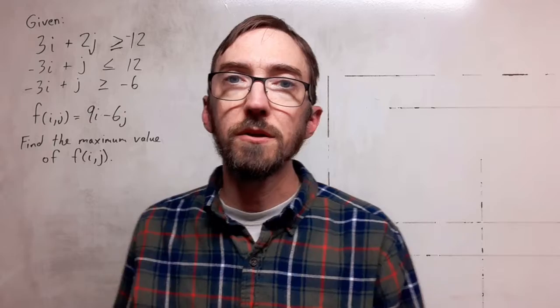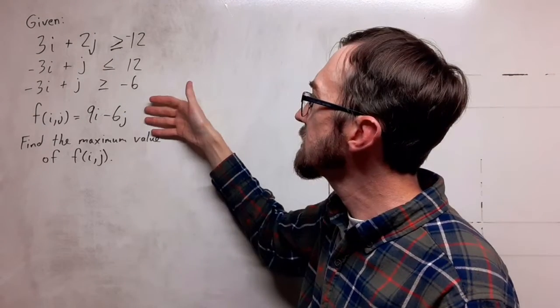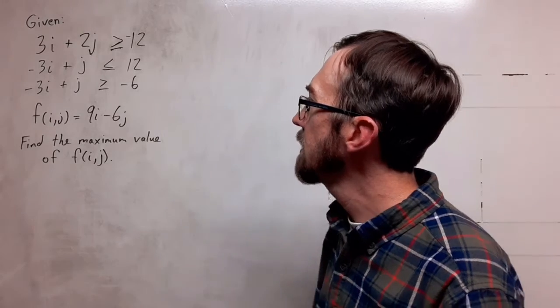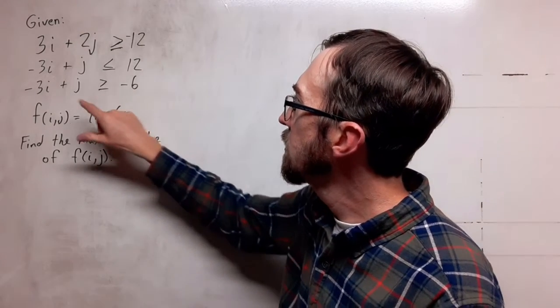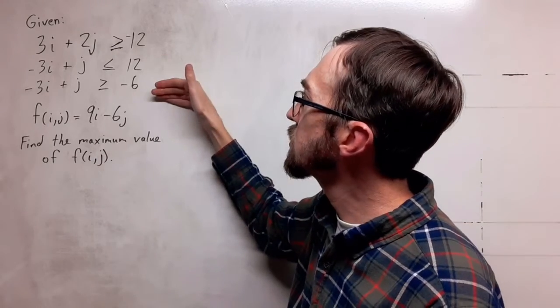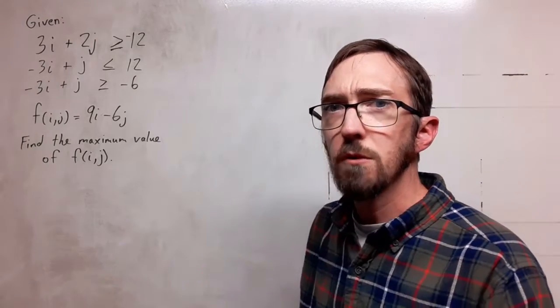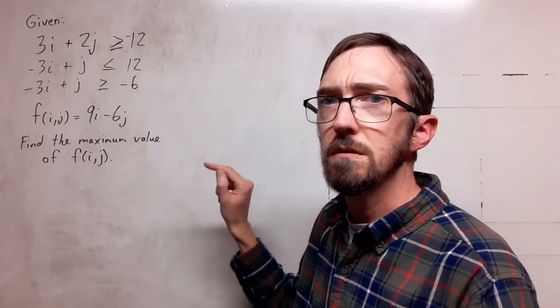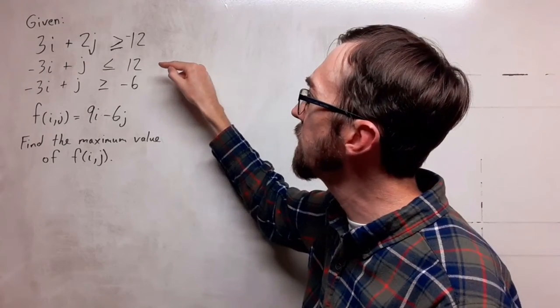I'm going to look at linear programming with this system of inequalities and this constraint function. We're looking for a maximum value of this function for points that are true for these inequalities. To do this, I want to use a series of matrices to help me solve this.